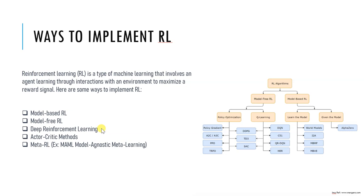An example of deep reinforcement learning is AlphaGo. AlphaGo is a computer program that became popular by beating a legendary human player at the game of Go, which is a very complex game. Deep reinforcement learning works by feeding complex data and equations so the agent can understand and play any hard game that humans have built.